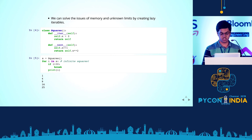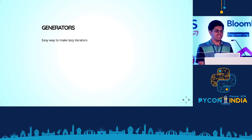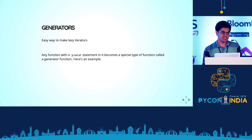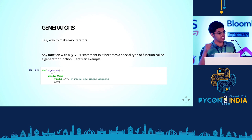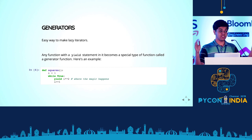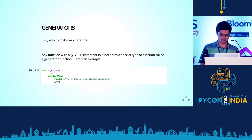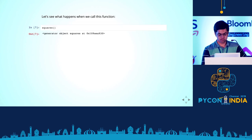Where generators come in is that they're basically an easy way to make lazy iterators. The way you make a generator is you use the special keyword called yield. Whenever you stick a yield inside a function, that whole function is no longer a normal function — it's a generator function. This function has an infinite loop in it with a yield of i squared. When you run it, you get something like a generator object — you're not getting any squares, and there's probably no infinite loop running either.